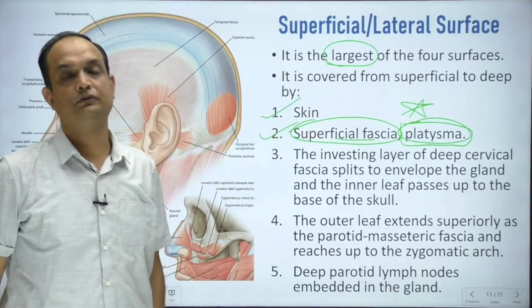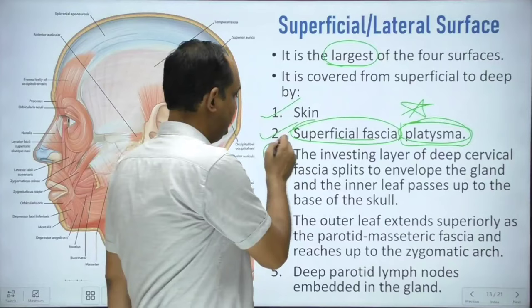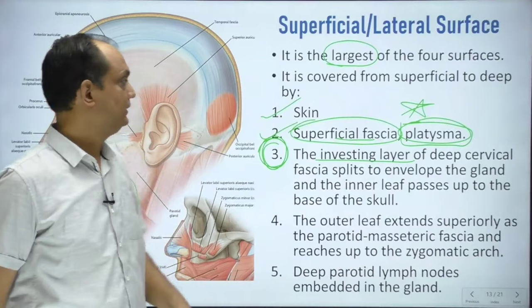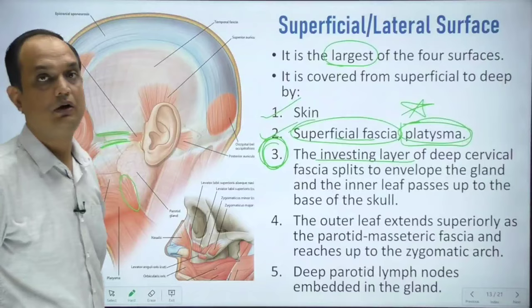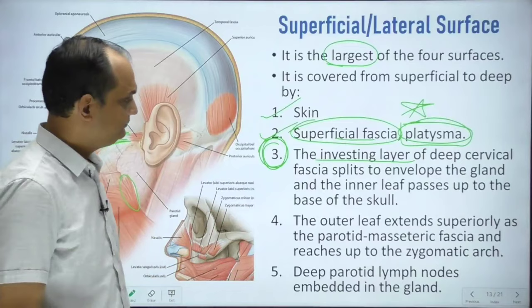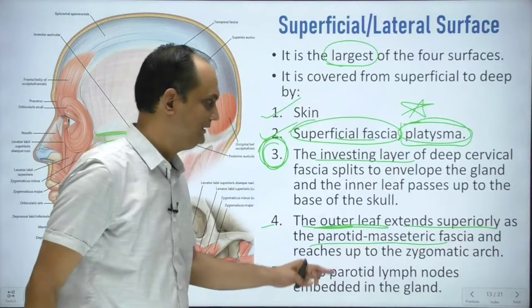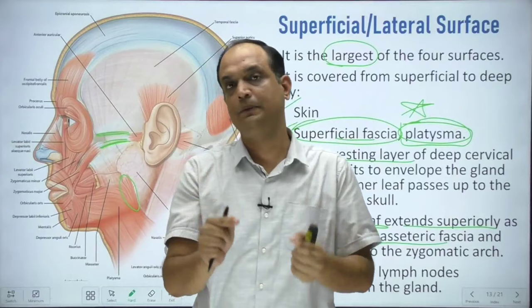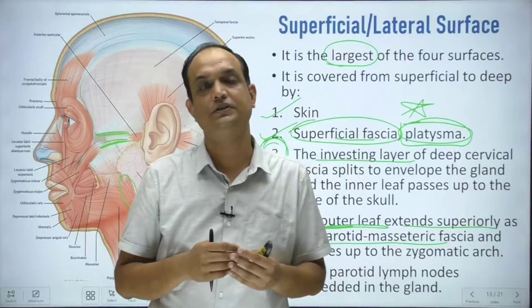The outer leaf extends superiorly as the parotidomasseteric fascia. The deep parotid lymph nodes are also embedded into the gland. So the layers covering the lateral surface from outside inward are: skin, superficial fascia, platysma, the investing layer modification known as parotid fascia, and along with this fascia you also have the parotid lymph nodes.